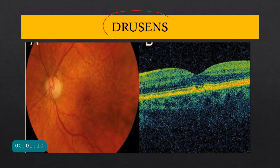The first thing that we see, which is very important in ARMD — specifically dry ARMD — is the presence of drusen. Drusen are accumulations which occur in the inner collagenous layer of Bruch's membrane and in the retinal pigment epithelium. Drusen can be of different types: hard drusen, soft drusen, and confluent drusen. Those drusen can coalesce together and form a large pigment epithelial detachment as well.